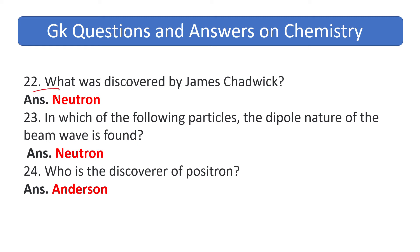What was discovered by James Chadwick? The answer is the neutron. In which of the following particles is the dipole nature of the beam wave found? The answer is neutron. Who is the discoverer of the positron? The answer is Anderson.